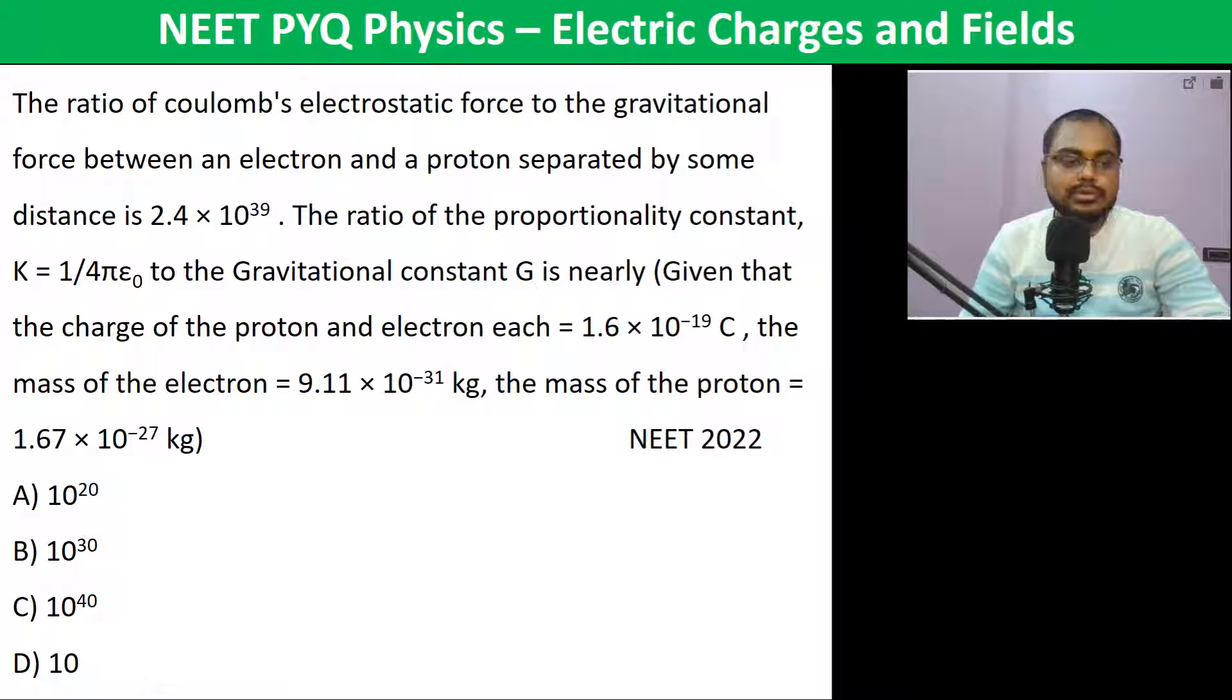The ratio of coulomb's electrostatic force to the gravitational force between an electron and proton separated by some distance - we have to calculate it. So the ratio of coulomb's force: 9 × 10^9 × q1 × q2.